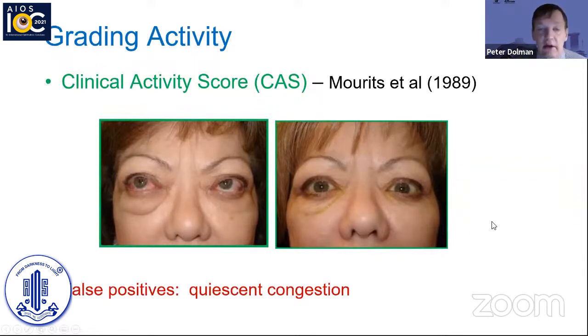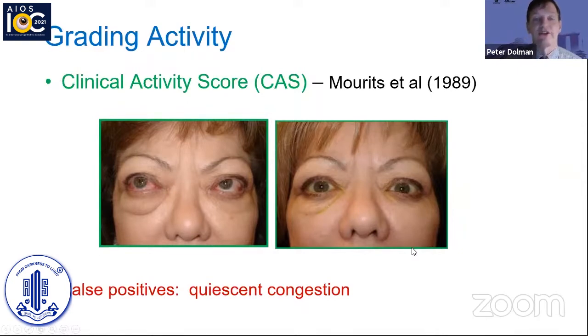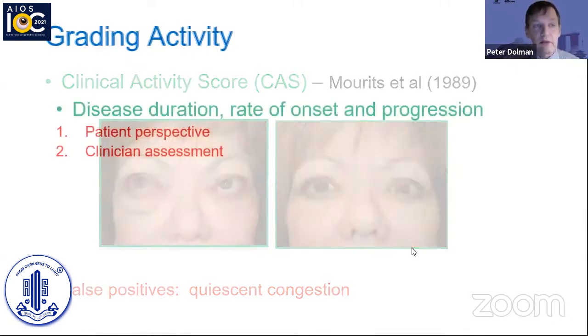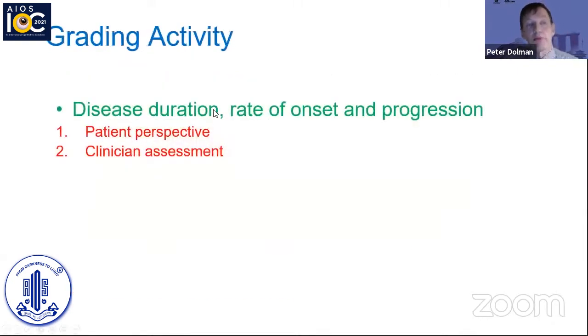There are important false negatives and positives to be aware of. The lipogenic phenotype without much extraocular muscle involvement may develop quite marked proptosis and lid retraction without ever developing a significant CAS score. East Asian patients may develop striking extraocular muscle involvement at the apex leading to severe vision loss from optic neuropathy, again often with very little evidence of inflammatory soft tissue changes. False positives also occur — one patient was kept on corticosteroids for a year and a half for congestion, but in fact had no progressive disease and needed only simple surgery.